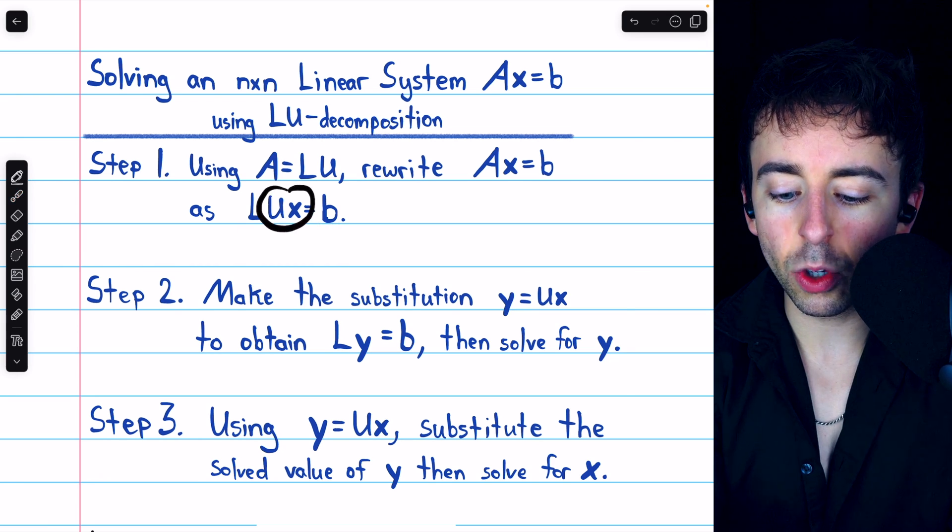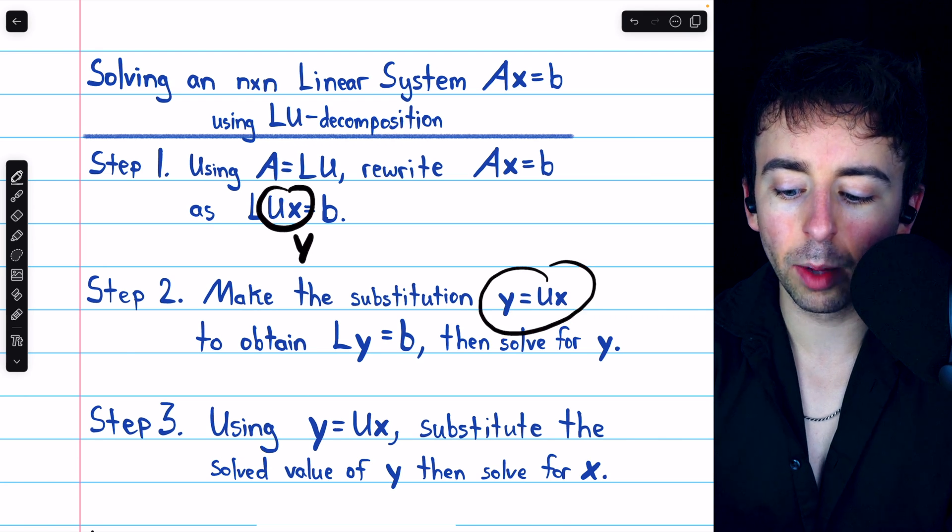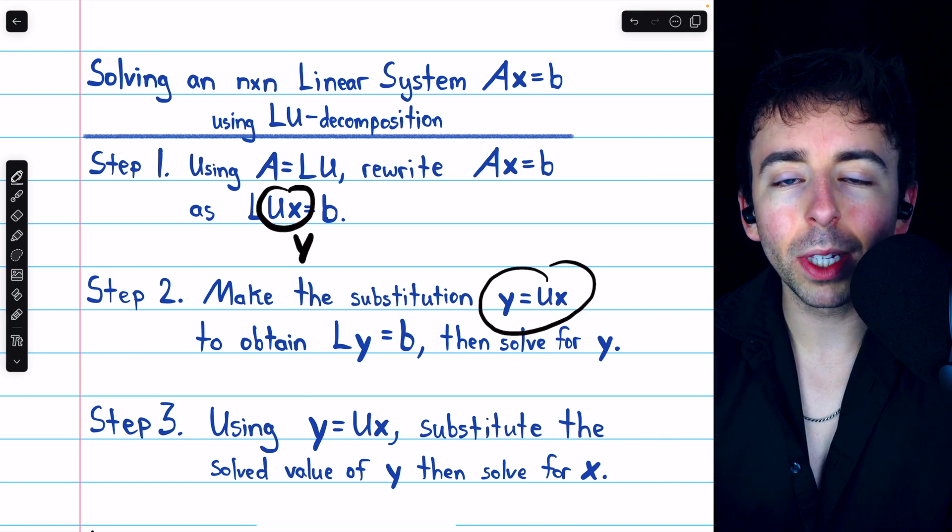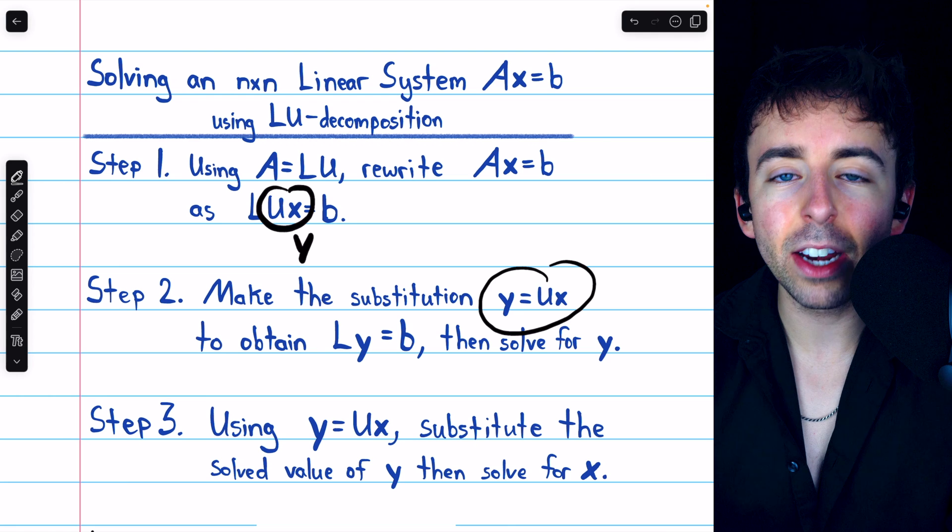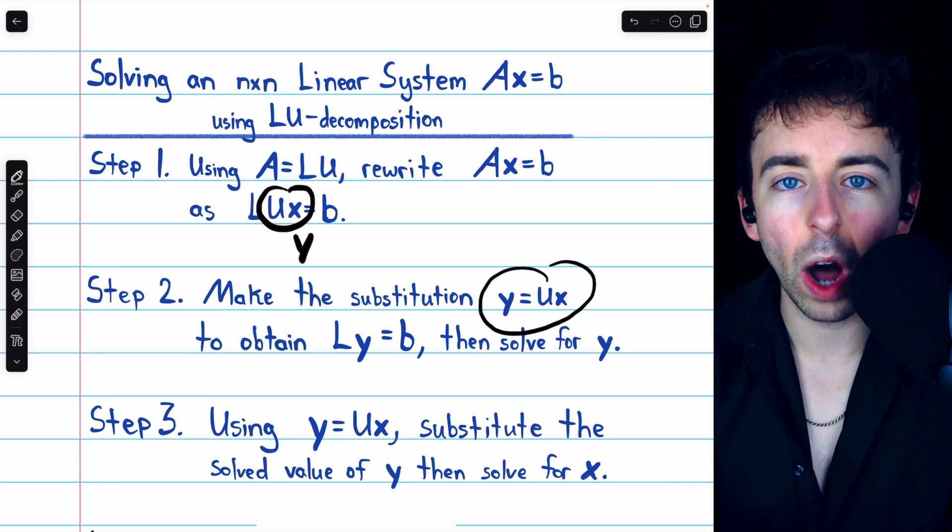Then, the product U times X is itself a column vector, and so we'll replace U times X with a new variable vector that we call Y.